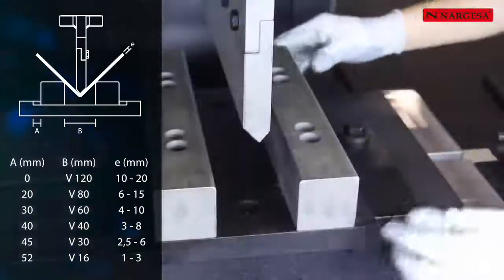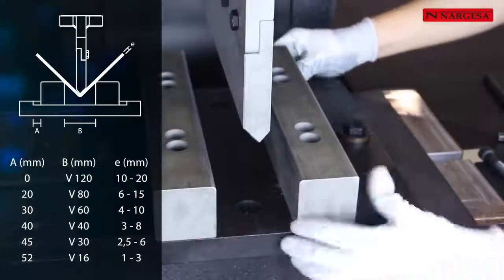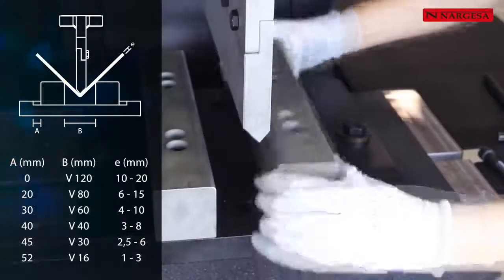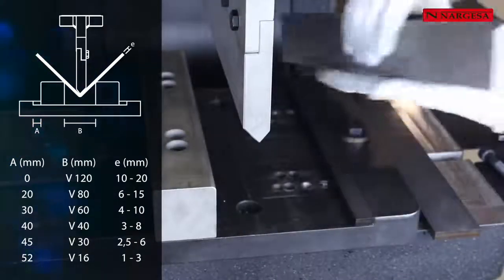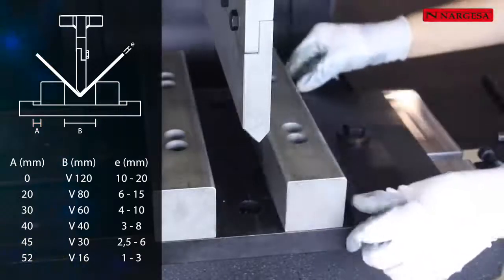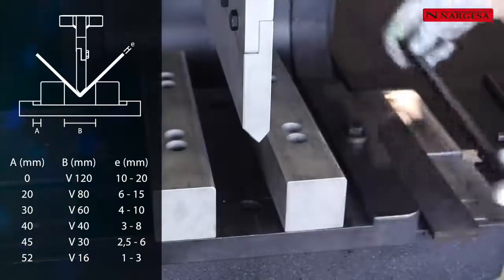Depending on the thicknesses we use the die for, it will open more or less. The smaller the slot, the thinner the sheet thickness we will be able to fold.